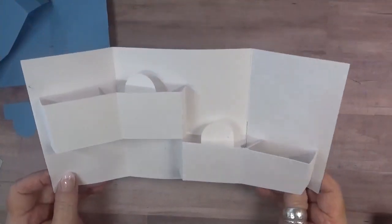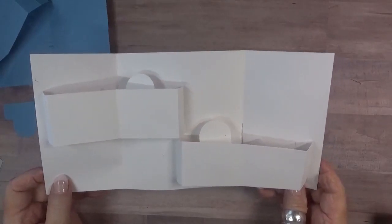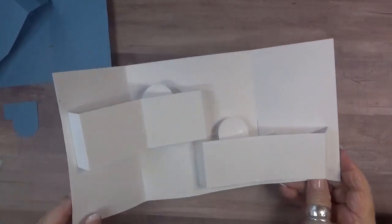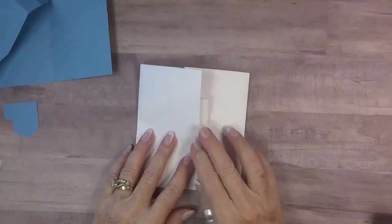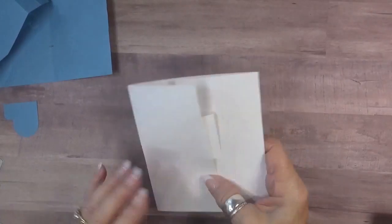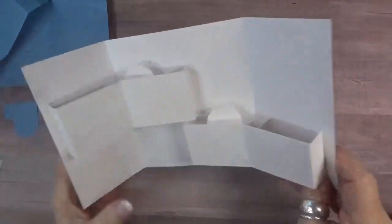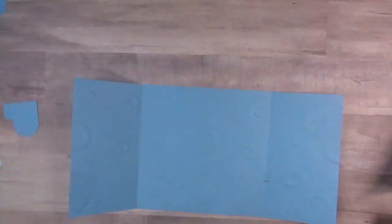As usual, I made an ugly prototype to see if my idea would work. Luckily it did, but some alterations were required. I saw that for two mechanisms I needed a larger card so that the pop-ups wouldn't collide with each other and that when it was closed everything would fit inside the card. In order to achieve that, I decided to make a 6x6 card.